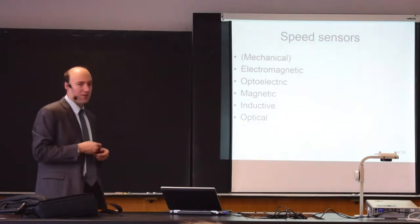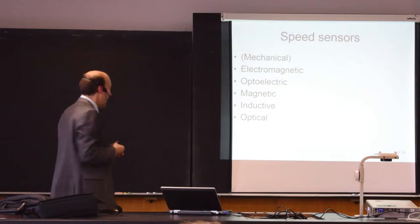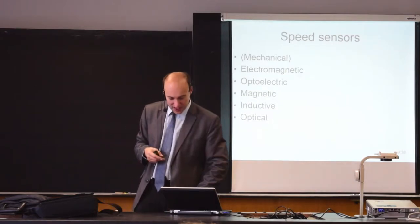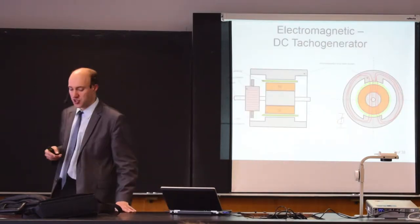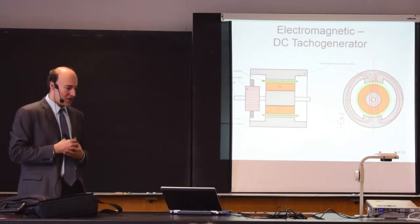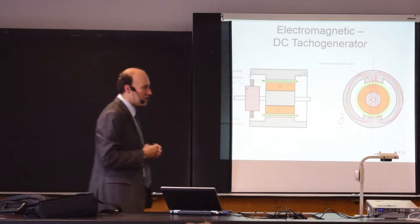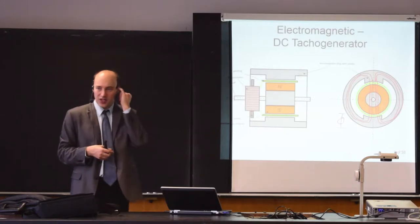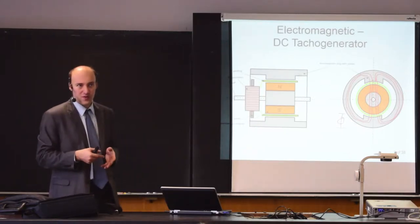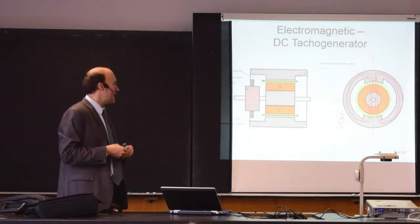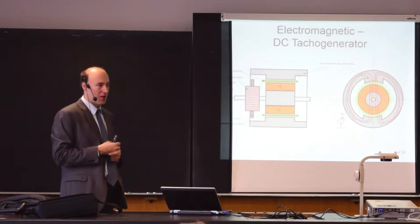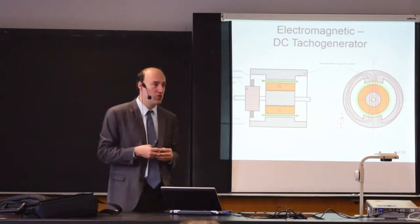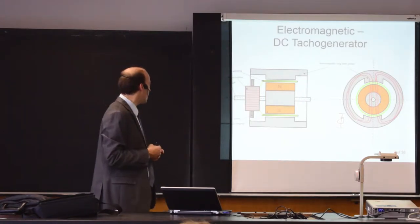We can also measure speed with pure optical sensors, and I'll show you just one example: the stroboscope. Let's start with the electromagnetic sensor called a DC tacho generator. A DC tacho generator is essentially an electric machine — a generator that produces a voltage — and the amplitude of this voltage is a function of the speed of rotation. It is something like an electric generator, but we will not use it to create power; we use it simply to create a voltage that we measure.